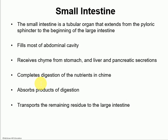Moving on to the small intestine — that is the longest part of the digestive system. It's made out of three different parts: the duodenum, the jejunum, and the ileum. You can remember them in order as DJI. It extends all the way from the pyloric sphincter of the stomach until it reaches the large intestine, attaching at an area known as the ileocecal valve. It fills most of the abdominal cavity. It receives the chyme from the stomach, pancreatic juice, and bile from the gallbladder. This is where we finalize digestion and where most nutrients are absorbed — the majority of digestion and absorption is really done in the small intestine.